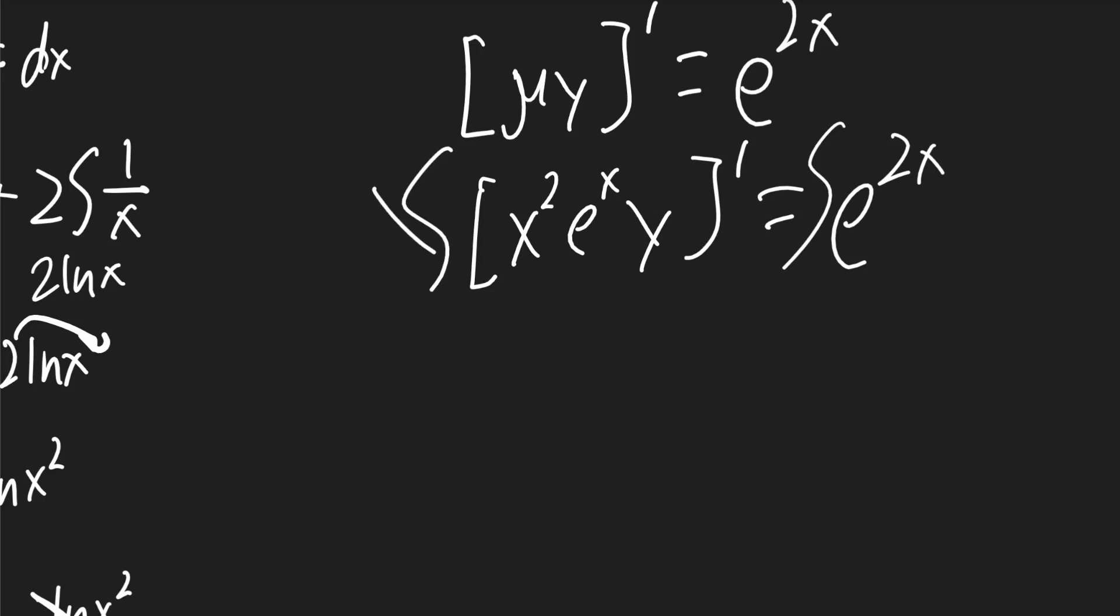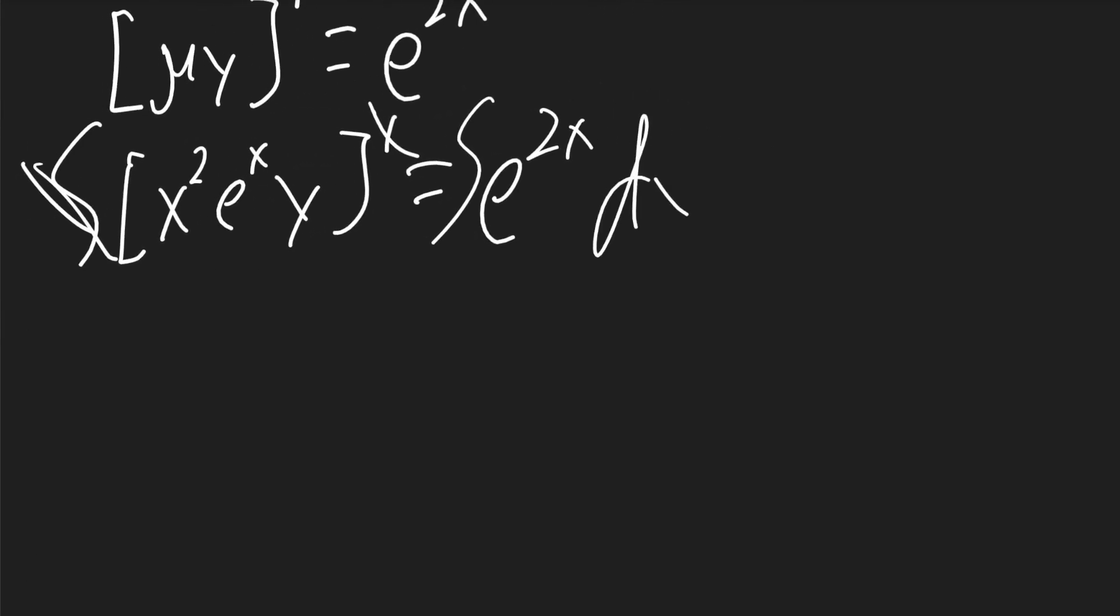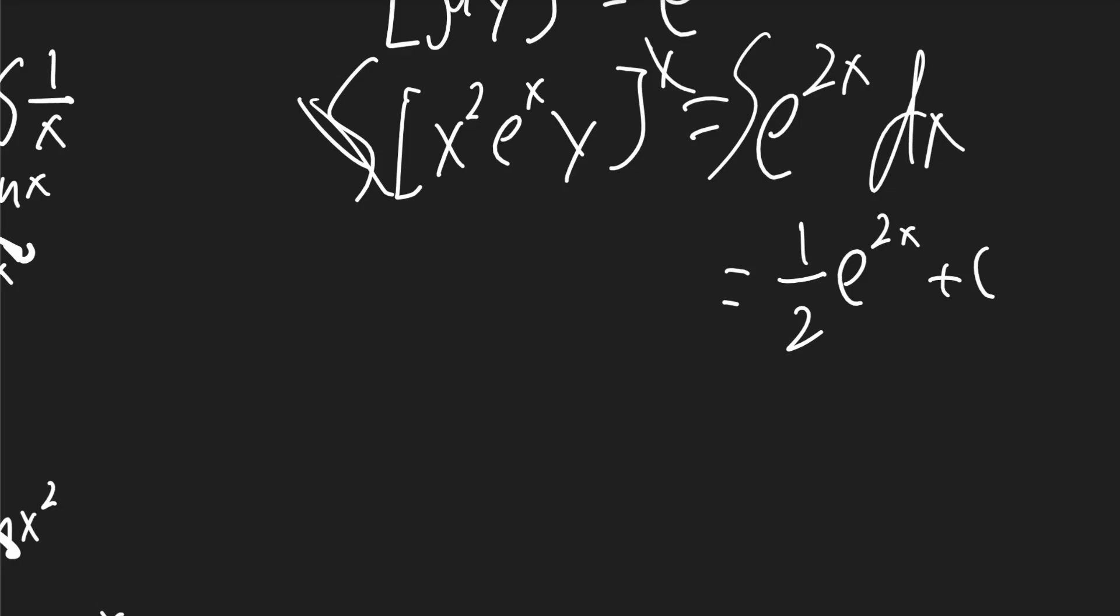We can now integrate both sides. On the left, the integral will cancel with the derivative. And on the right, the integral of e to the 2x is going to be 1 half e to the 2x plus c. On the left, because the integral will cancel the derivative, we can just write x squared e to the x times y.